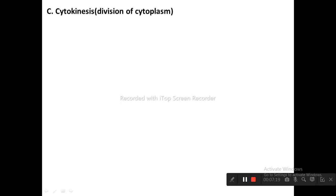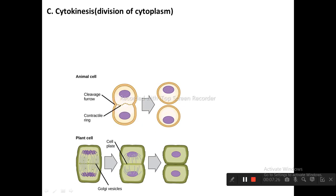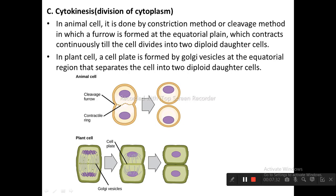Finally, cytokinesis is the division of cytoplasm. It occurs by different methods in plant and animal cells. In animal cells, it occurs by the constriction method or cleavage method, where a furrow is formed at the equatorial plane which contracts continuously until the cell divides into two diploid daughter cells. In plant cells, a cell plate is formed by Golgi vesicles at the equatorial region, separating the cell into two diploid daughter cells, as shown in the diagram.